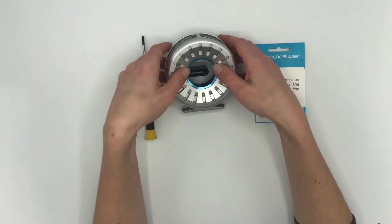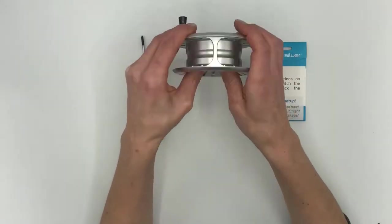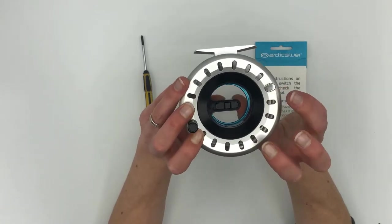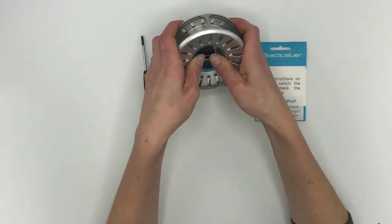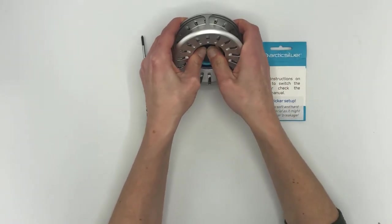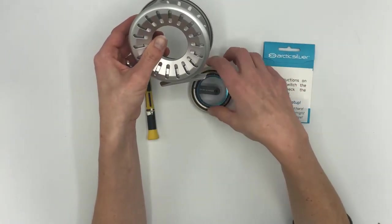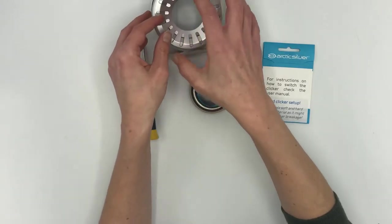You put your thumbs here on the logo to release the spool. Make sure that you don't have your fingers over the black part because this one is coming out when you're pushing. Then you just give it a gentle push like this and the center hub is released.